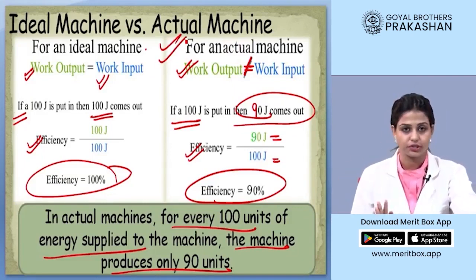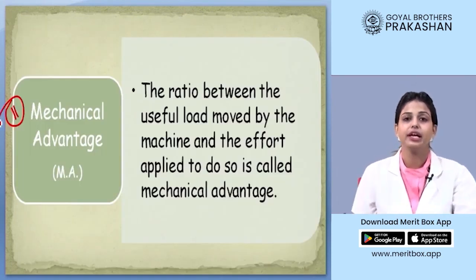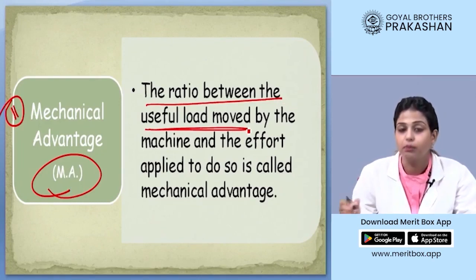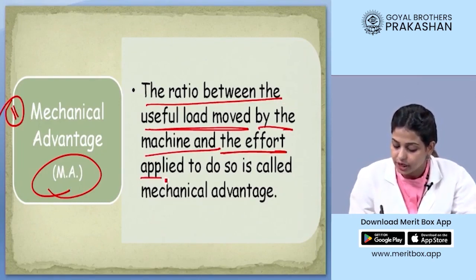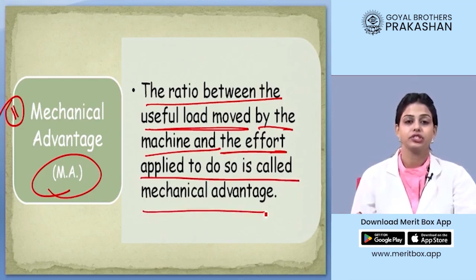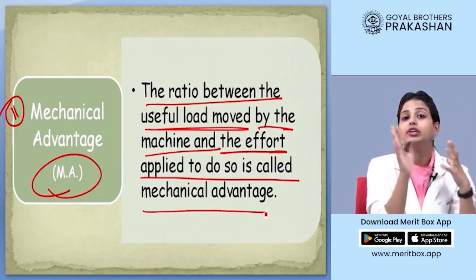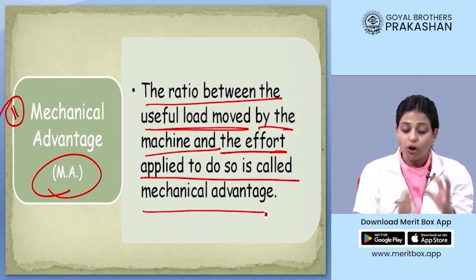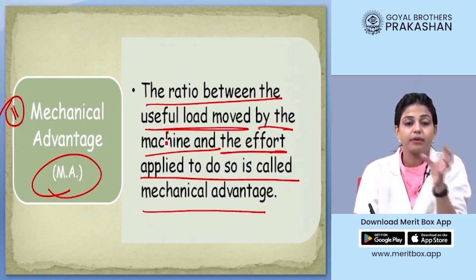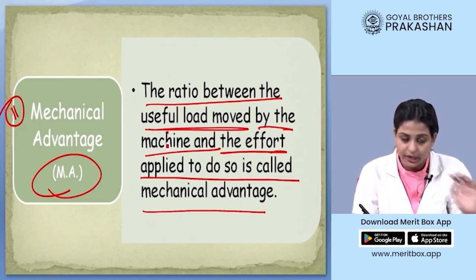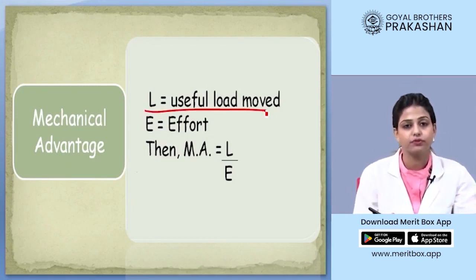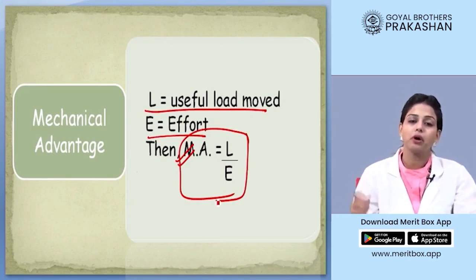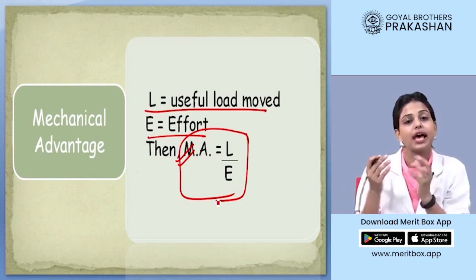The last definition is mechanical advantage, referred to by MA. It is defined as the ratio between the useful load moved by the machine and the effort applied to do so. When we bring a machine into the system, how much useful load moves for the same effort is defined as mechanical advantage. In numerical terms, if L is the useful load and E is the effort, then MA = L upon E. These are the important terms you should know before understanding simple machines and their working.